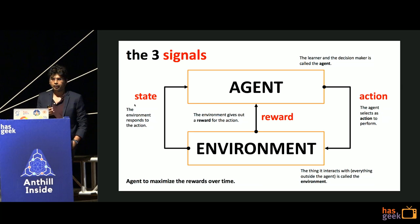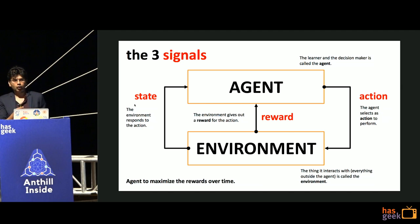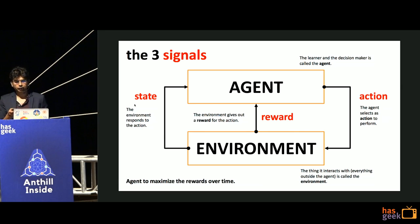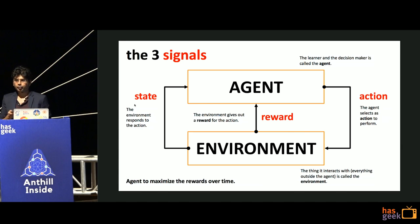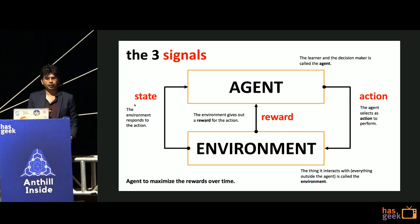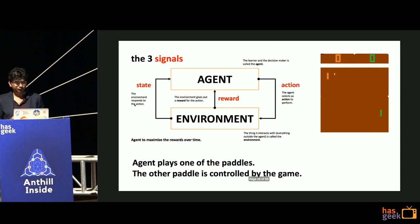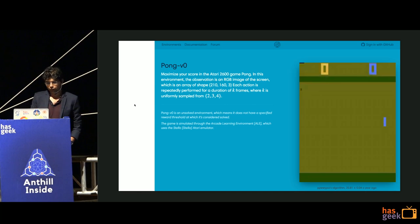The agent selects an action to perform - for example, trying to get up or walk. The environment gives out a reward for the action, and the state gets modified. The key things to remember are: action, reward, and state. The agent takes an action, the environment gives a reward, the state changes, then the agent takes the next action. This is a closed-loop that keeps continuing - that's the basic formalism of an RL problem.